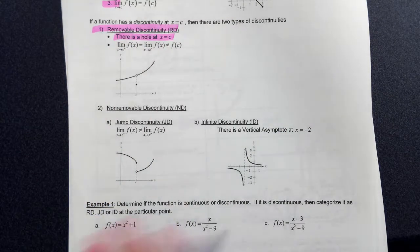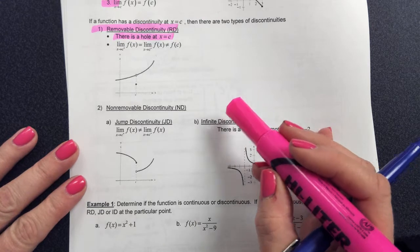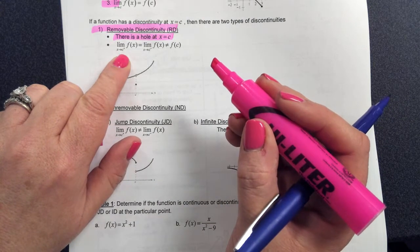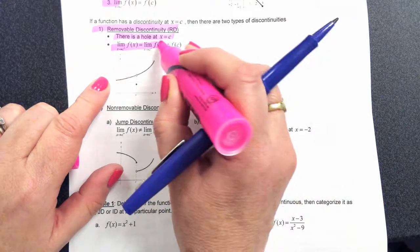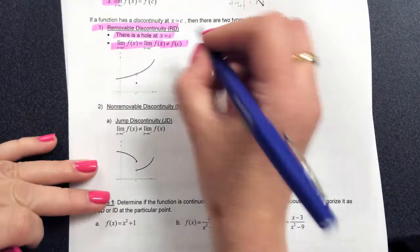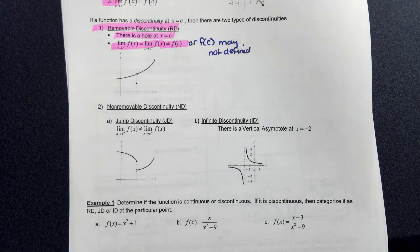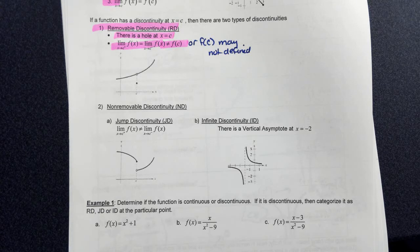Removable discontinuity occurs when you have a hole. We call it removable because the function is continuous for all real numbers except at that one point — if we remove that hole, it would be continuous everywhere. What creates removable discontinuity is when the limit from the right and left are the same, but it's not equal to the defined value, or f(c) may not be defined at all.